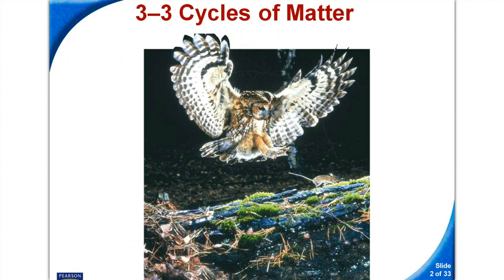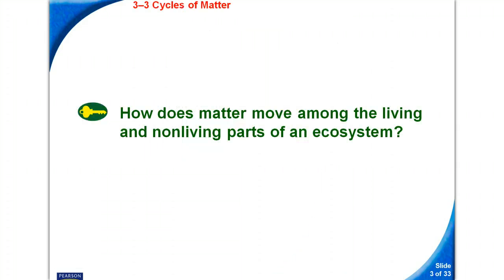Section 3.3, Cycles of Matter. Key concept number one: How does matter move among the living and non-living ecosystem?